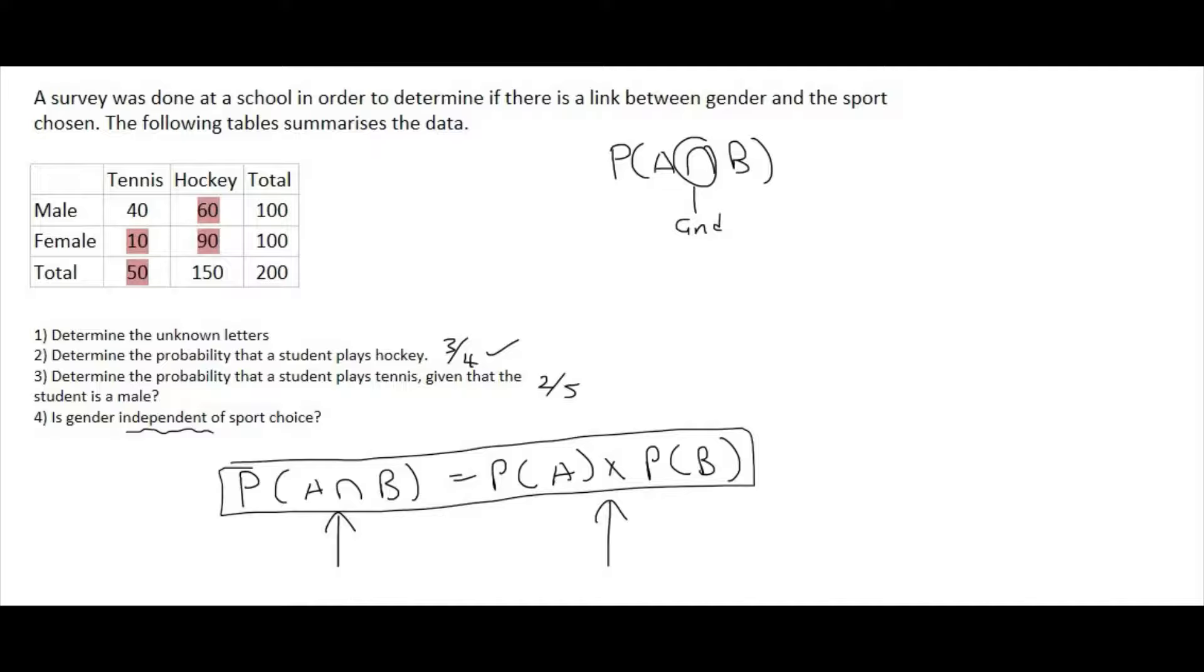Okay, but now what is A and B? Well, the two categories we are busy with in this question is gender and sport. So you can choose whichever one you like for A and B. Just don't go choose male and female. You have to choose one of the genders and one of the sports. So I'm going to go with female and tennis. Those are going to be my two categories that I'm going to look at.